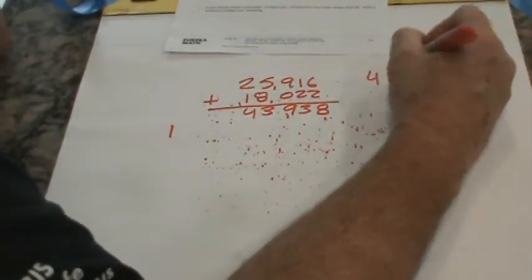Here we go. Six plus two is eight. One plus two is three. Nine plus zero is nine. Five plus eight is thirteen. Bring up the one, two, three, and four. 43,938. Now, we gotta do some subtraction, right? 43,948. And we're going to subtract the amount, the exact amount of potatoes that were sold for the whole week.